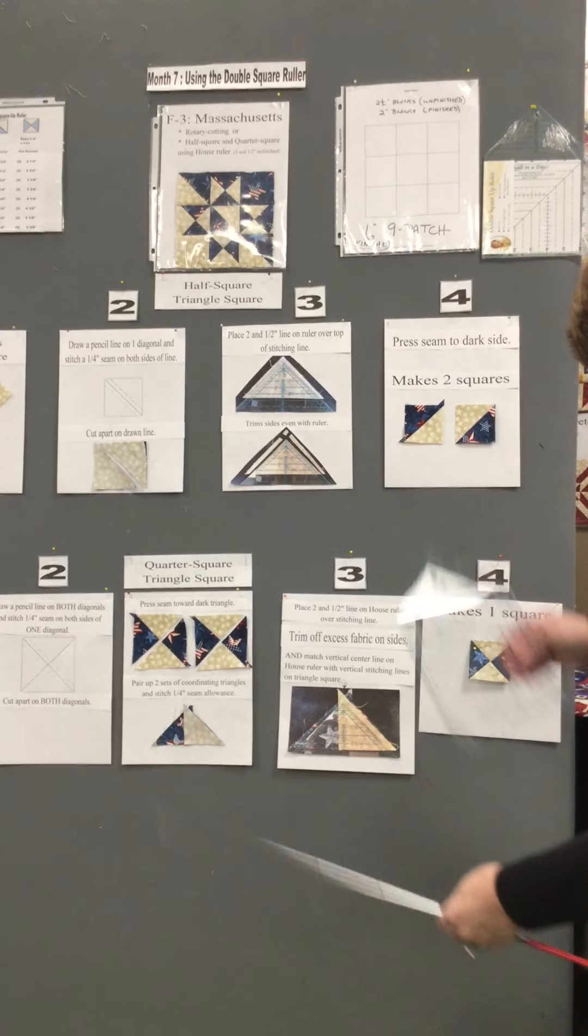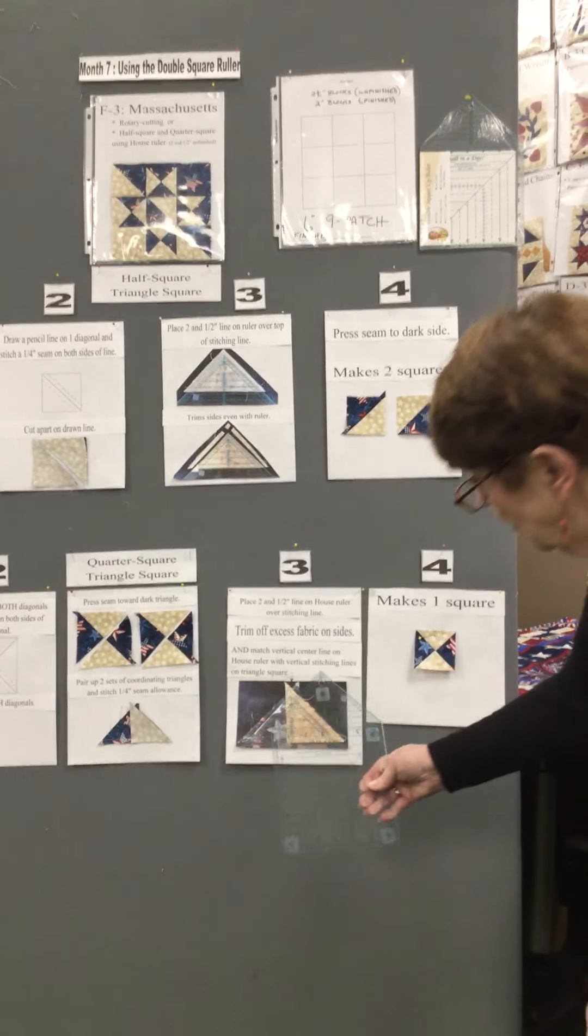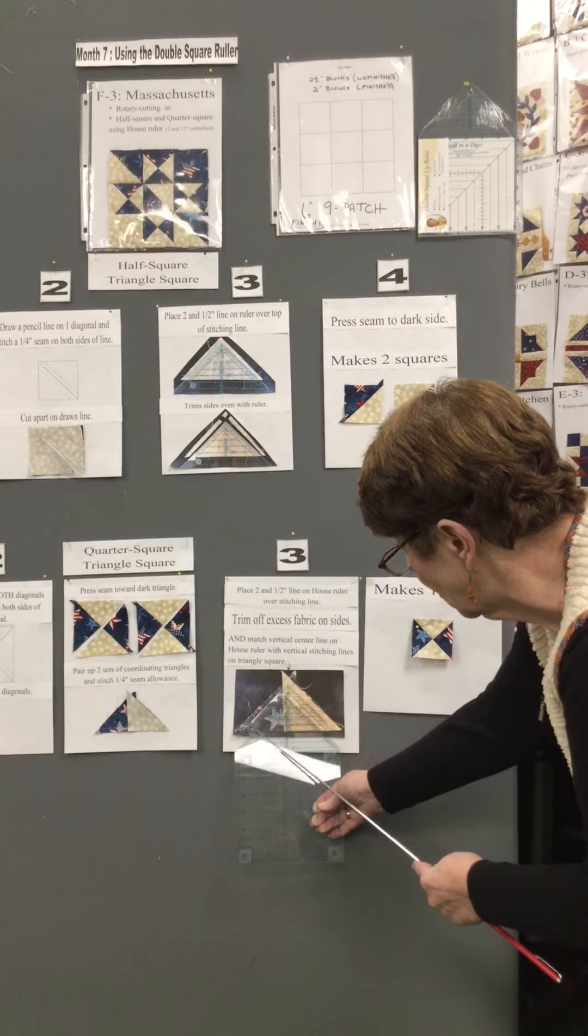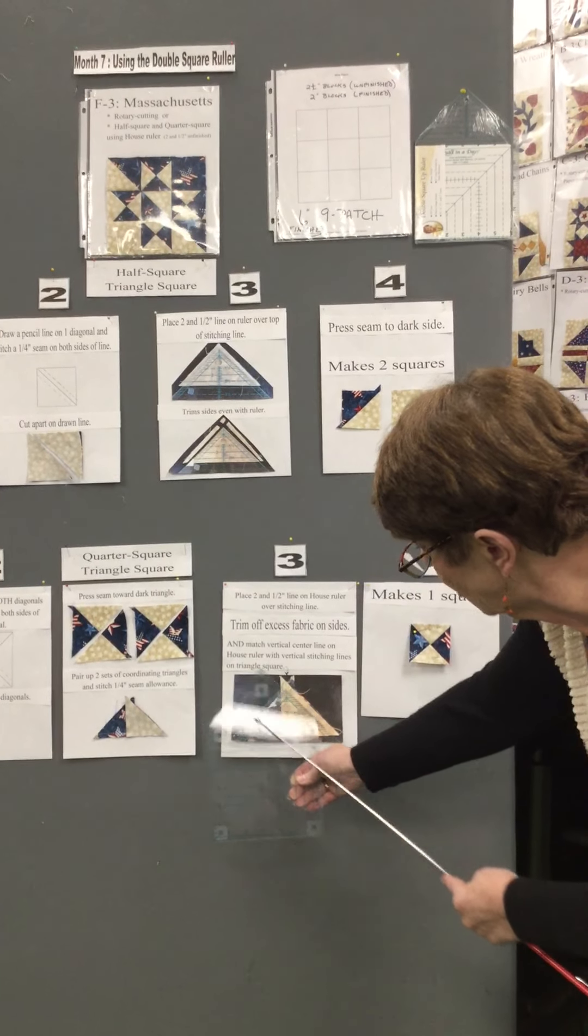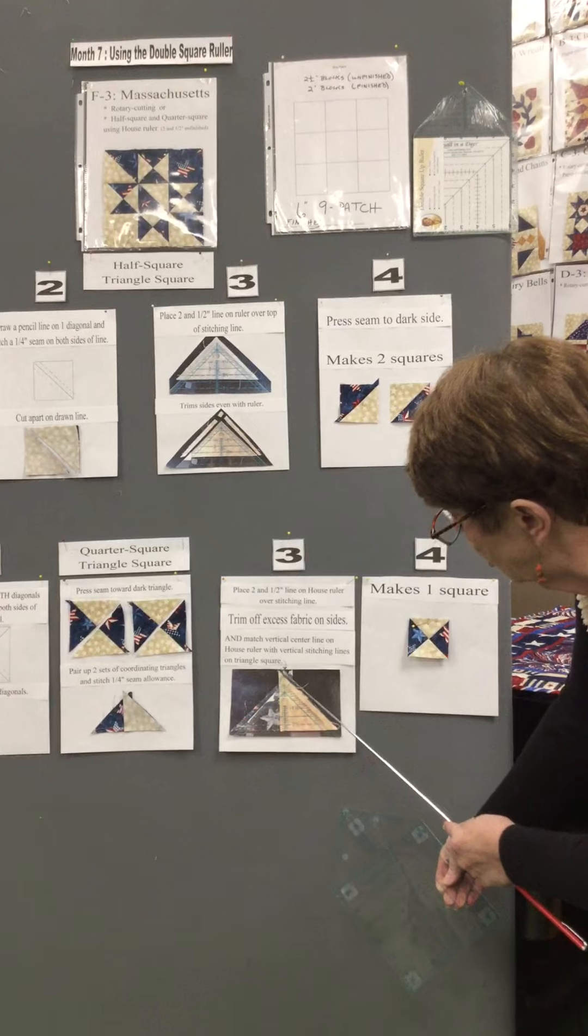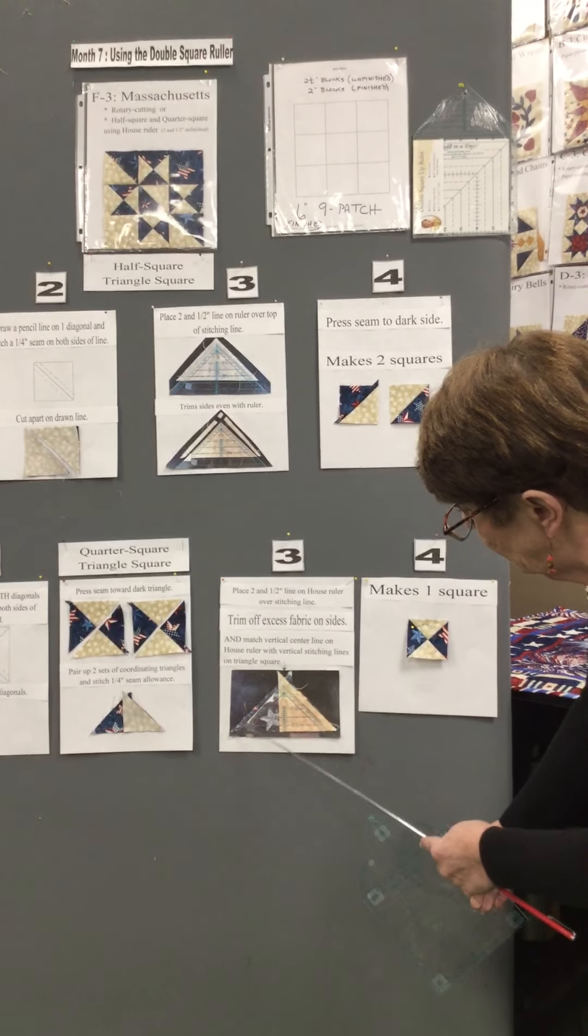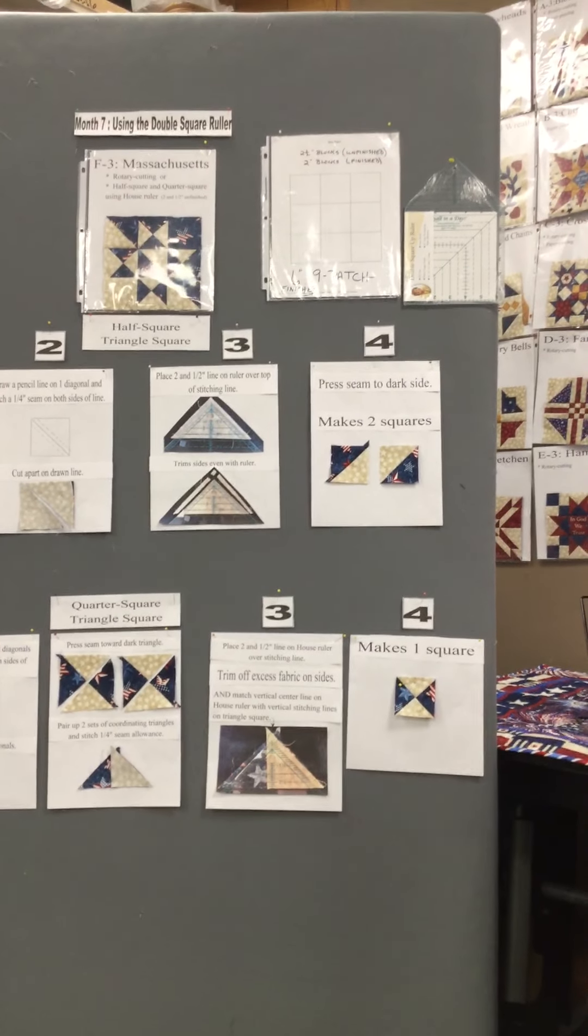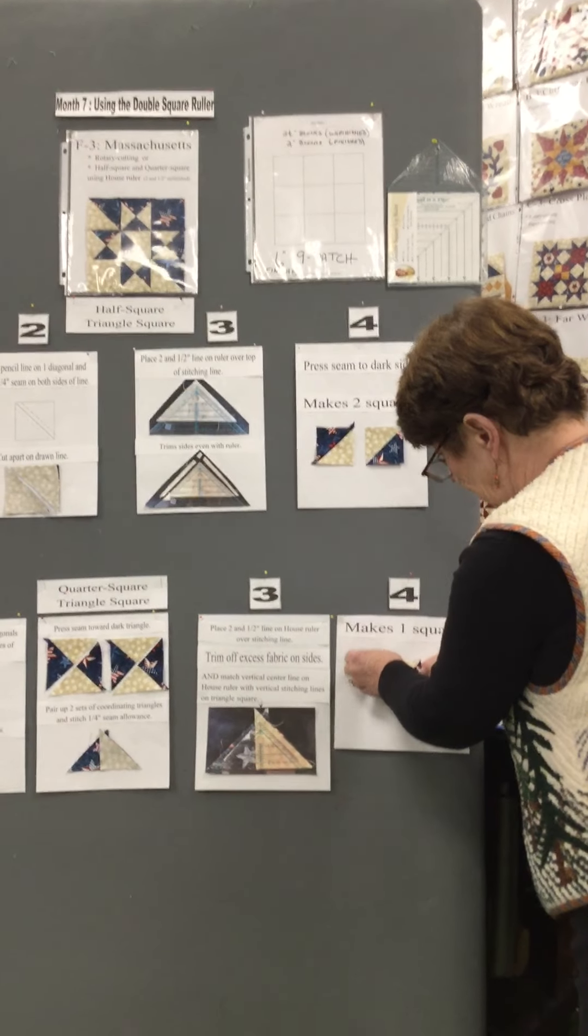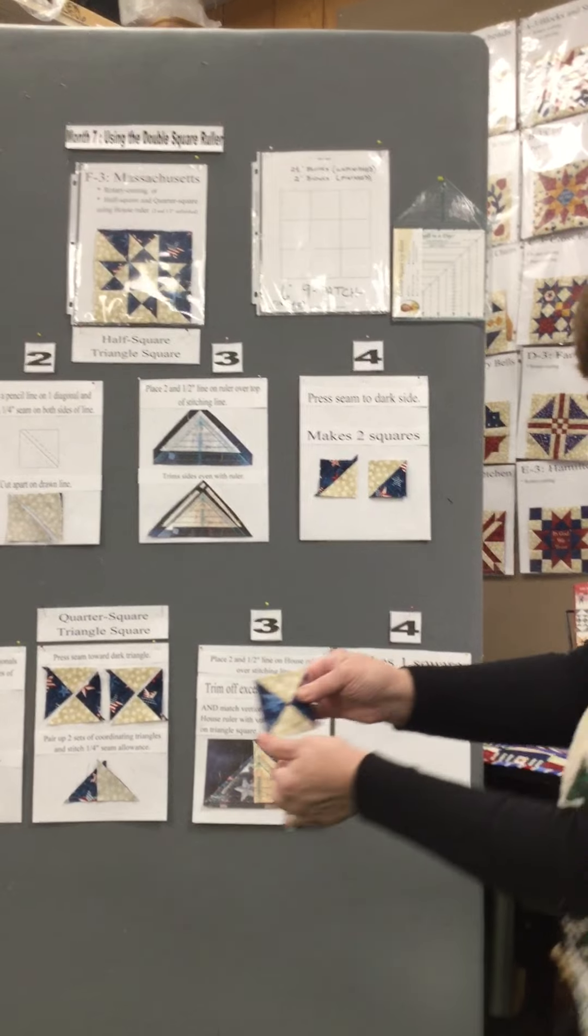When you put your square up ruler on there again, you put it on the two and a half going across here. This time you also want to put the center of the square up going up the center of your vertical seam. Again, all of your excess is coming off both sides. When you open that fellow up, he's going to be a perfect two and a half inch square.